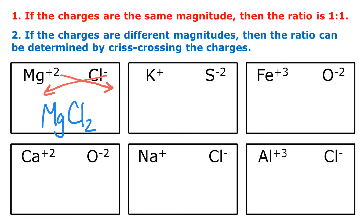Next I have potassium, K, with a plus one charge, and sulfide with a minus two charge. Those are different, so I will crisscross those charges. So that gives K2S as the formula.